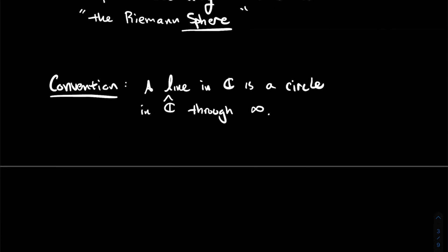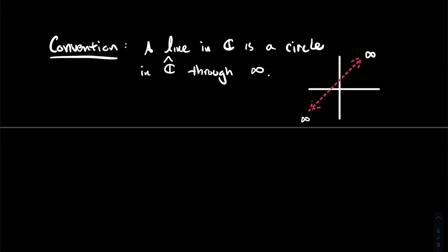Here's a convention: a line in the complex plane is a circle in the extended complex plane that goes through the point infinity. There's only one symbol infinity — as you move away from zero in any direction, you approach that single point. So a line, going to infinity on both ends, approaches the same symbol, and in that sense it wraps around like a circle. This contrasts with real analysis, where going far right gives positive infinity and far left gives negative infinity.